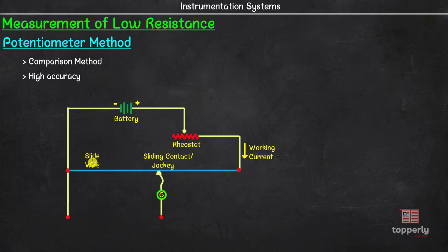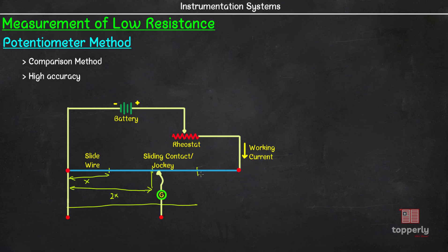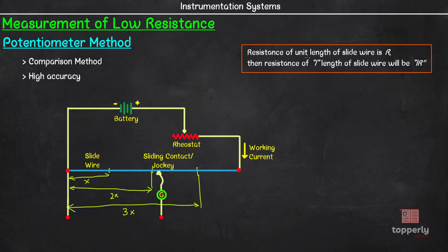The slidewire is special as it has uniform cross section and resistance across its entire length. For example, if we divide the slidewire into 4 equal parts and the resistance of the first section is x, then the resistance of two sections will be 2x, and three sections will be 3x, and so on. In short, if the resistance of unit length of slidewire is R, then the resistance of length L of the slidewire will be L×R.